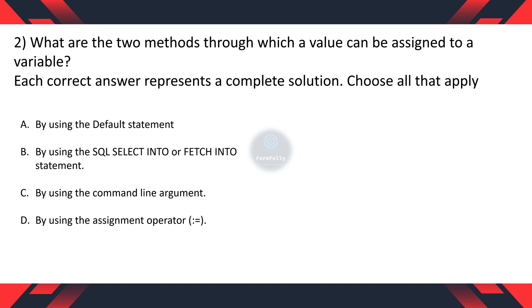Question 2: What are the two methods through which a value can be assigned to a variable? Each correct answer represents a complete solution. A. By using the default statement. B. By using the SQL select into or fetch into statement. C. By using the command line argument. D. By using the assignment operator.